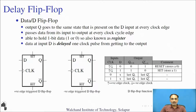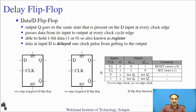Here two symbols are shown. The first symbol is a positive edge-triggered D flip-flop, whereas the second symbol is a negative edge-triggered D flip-flop. In the positive edge-triggered case, Q changes its state on the positive edges of the clock signal, whereas in the negative edge-triggered D flip-flop, Q changes its state on the negative edges of the clock signal. On the right-hand side the D flip-flop function table is shown, in which input-output relations are listed in tabular form. On the clock edges, Q goes to the same state that is present on the D input.